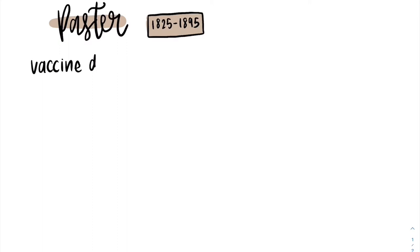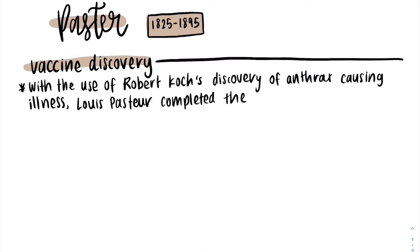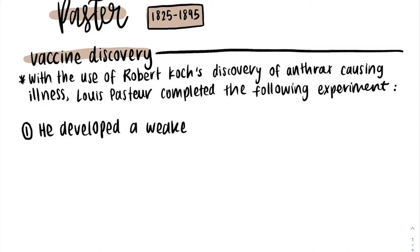Today we will be diving into Louis Pasteur and his contribution to the development of the anthrax vaccine. Louis Pasteur is a French chemist who used Robert Koch's discovery of anthrax bacterium being a cause of illness to produce and test a vaccine for anthrax through the following experiment.